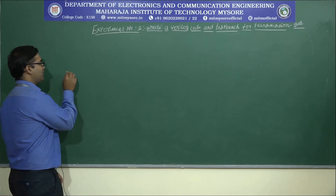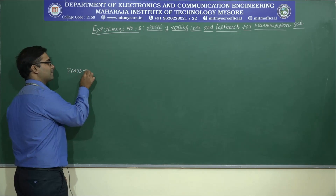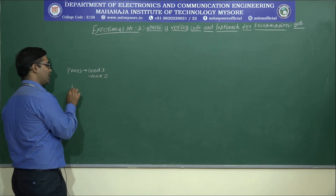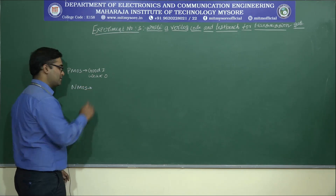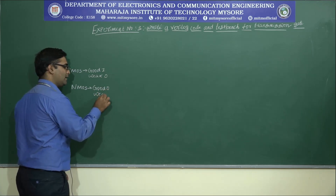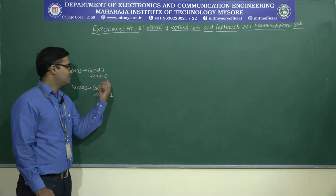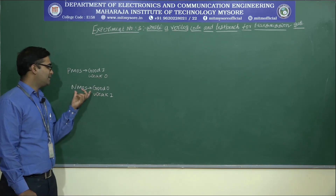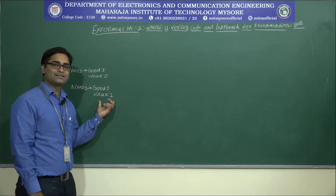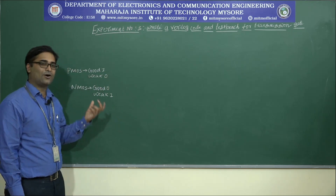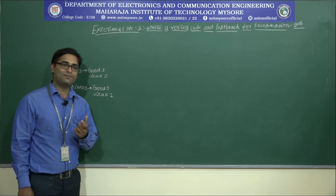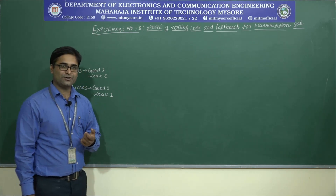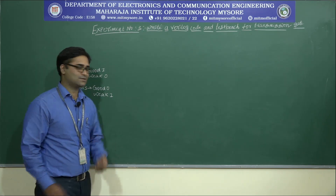The pMOS conducts good one and weak zero, and the nMOS conducts good zero and weak one. There is a deficiency of the pMOS in that it conducts weak zero, and the deficiency of the nMOS is that it conducts weak one. To overcome the deficiency of the two pass transistors, we build another digital logic called the transmission gate, which is the combination of both the pMOS and the nMOS.